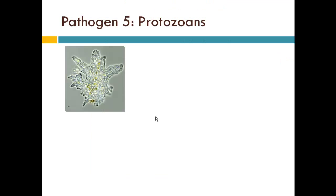The next pathogens are protozoans. Protozoans are moving up in the ladder of complexity — they are not prokaryotic, they are eukaryotic. This means they have a nucleus with DNA inside and other organelles like the Golgi apparatus and endoplasmic reticulum.